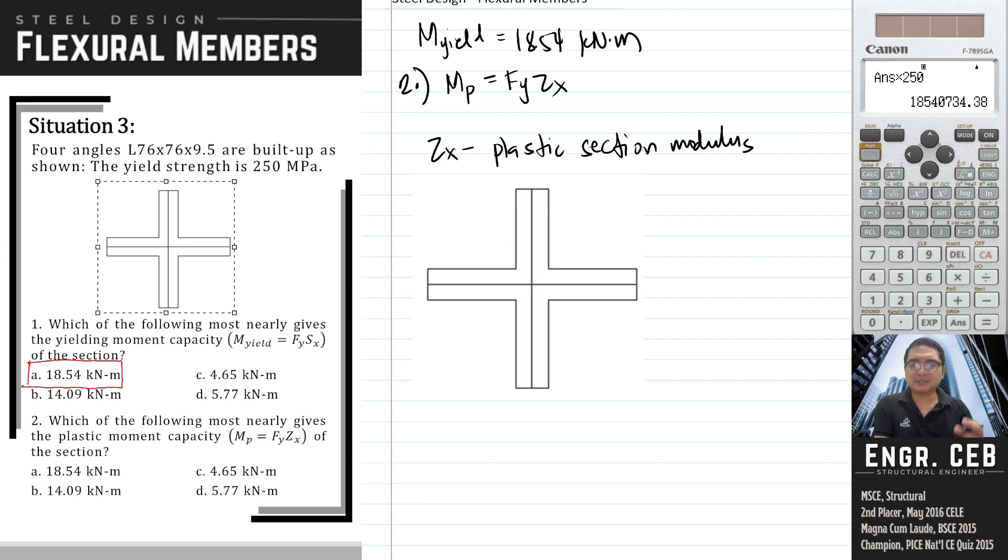We can just get the moment of area of the area above the neutral axis and then we just multiply it by 2. Because, as you can see, the section is symmetrical with respect to X. We can look at the built-up section as it contains a rectangle on this portion and another rectangle on this left and right side.